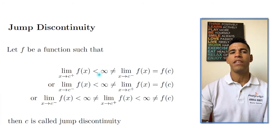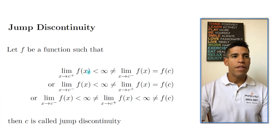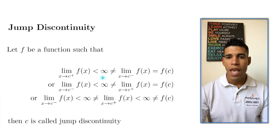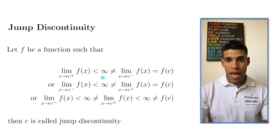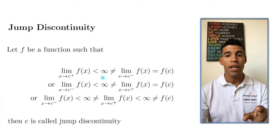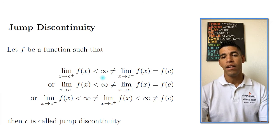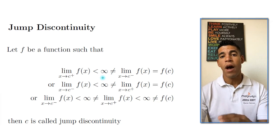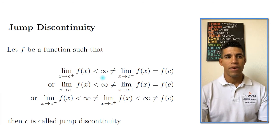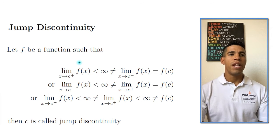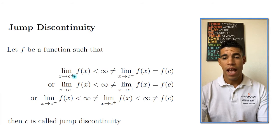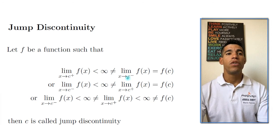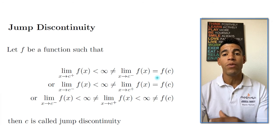Whenever you have something less than infinity, it means that it's finite — it's a real number, a fixed constant. So it says when the limit of x approaching c from the right is finite, it is not equal to the limit when x approaches c from the left, which is equal to f(c).